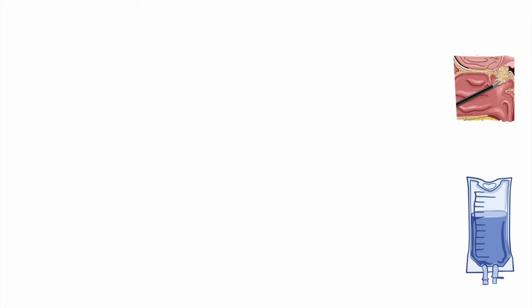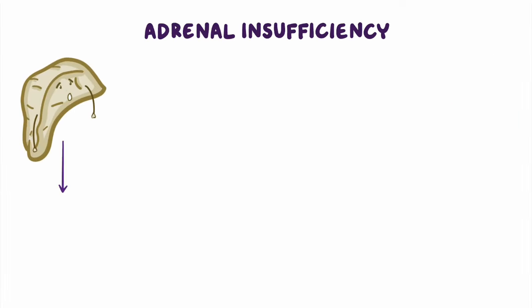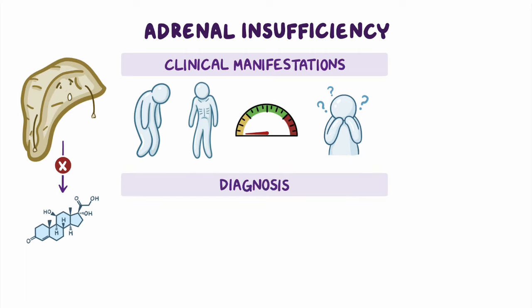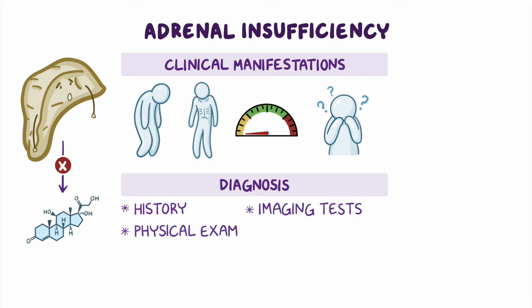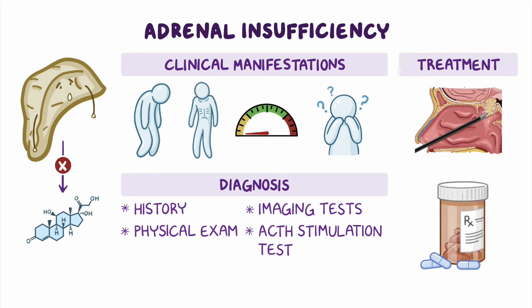As a quick recap, adrenal insufficiency is an endocrine disorder that occurs when the adrenal glands don't produce enough hormones. Clinical manifestations can include fatigue, weight loss, and loss of libido, or signs and symptoms of shock. Diagnosis is based on history, physical examination, and imaging tests, and is confirmed using an ACTH stimulation test. Treatment involves addressing the underlying cause and hormone replacement therapy.